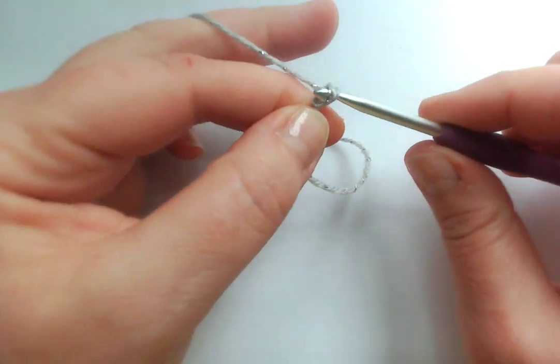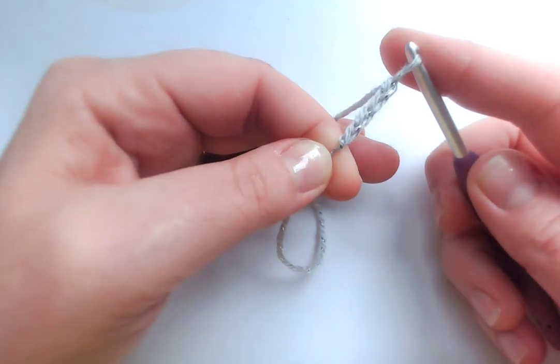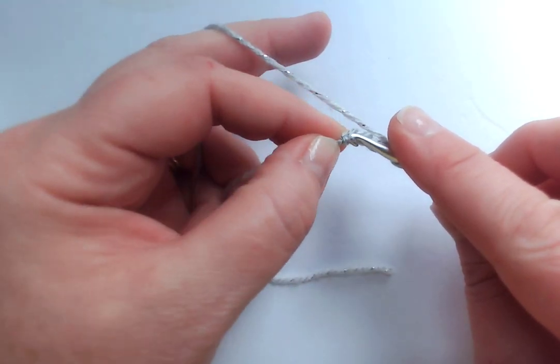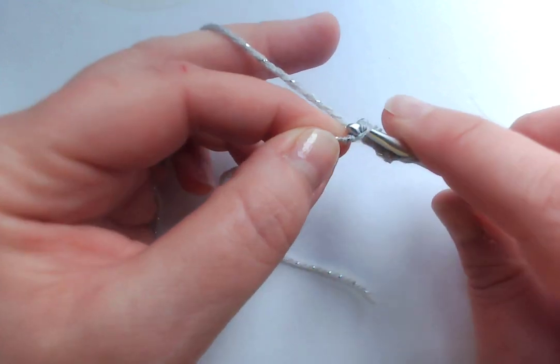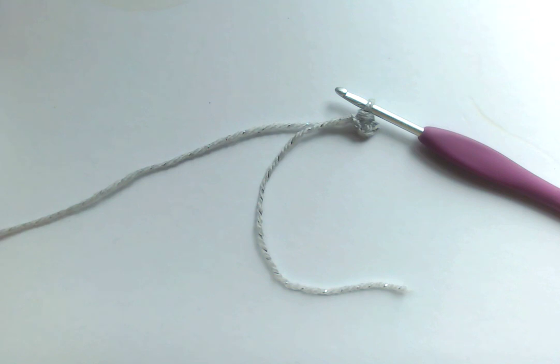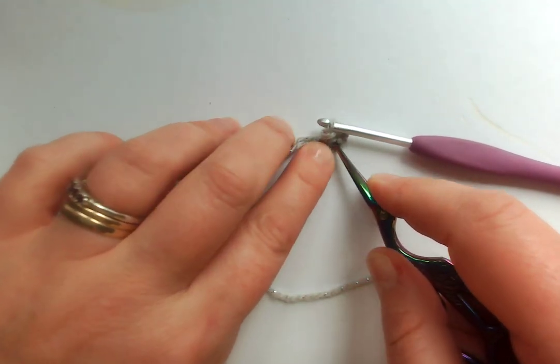I'm going to demonstrate in the silver because it's a bit easier to see than the white. You start with a chain four and then you slip stitch in the first chain, the one that's right next to the knot. So you get a tiny circle which is where all your stitches are going in the center of this circle.